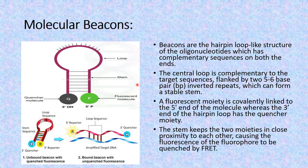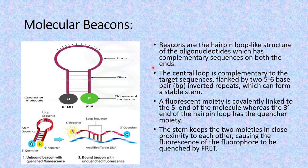Molecular beacons are hairpin loop-like structures of oligonucleotides and they have complementary sequences on both ends. The central loop is complementary to the target sequences — sequences complementary to some stretch present in the DNA that is being replicated or undergoing the polymerase chain reaction. This central sequence, which forms the loop, is flanked on both sides by 5 to 6 base pairs of inverted repeats, so that they may form complementary base pairs with each other. This forms the stem and the loop-like structure of the molecular beacon probes.